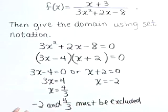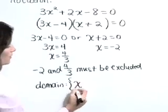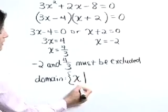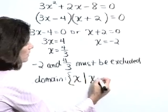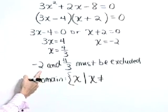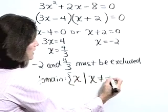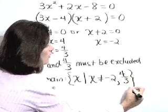Now, secondly, we want to give the domain using set notation. So let's write that as the domain consists of all x values such that x cannot be these values that cause the zero denominator. So x cannot equal negative 2 and x cannot equal 4 thirds.